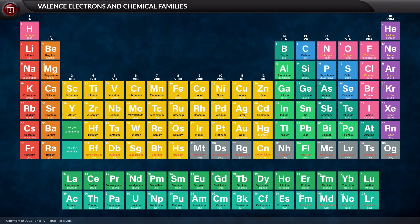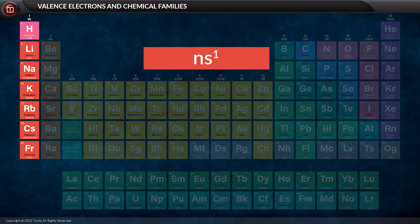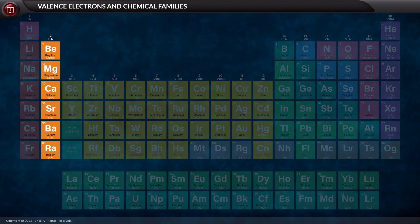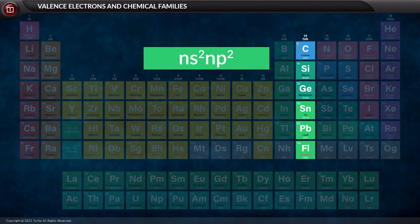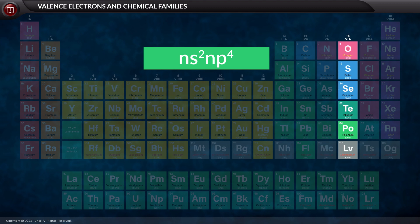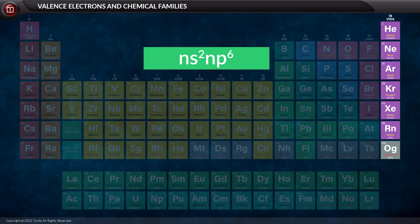The general outer electronic configuration of representative elements are as follows. For group 1 elements is NS1. Of group 2 elements is NS2. Of group 13 is NS2NP1. Of group 14 is NS2NP2. Of group 15 is NS2NP3. Of group 16 is NS2NP4. Of group 17 is NS2NP5. Of group 18 is NS2NP6.